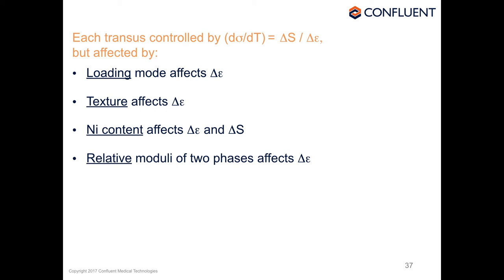The slopes are not strictly crystallographically fixed for several reasons. In compression, delta-epsilon is much, much smaller than in tension, so d-sigma-dT depends on loading mode (tension, compression, torsion). It also depends on texture — a strong wire texture delivers much larger strains between martensite and austenite, giving a lower d-sigma-dT than an equiaxed, fully annealed sample. Nickel content also matters: as nickel content increases, delta-epsilon increases, and presumably delta-S increases as well. The relative moduli of the phases also enter the picture.